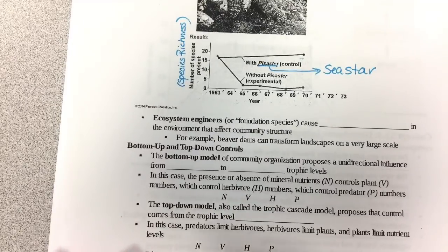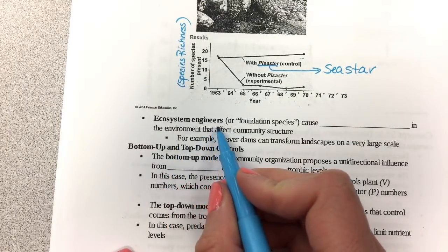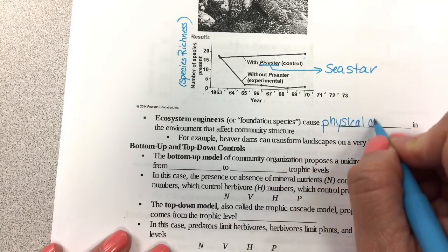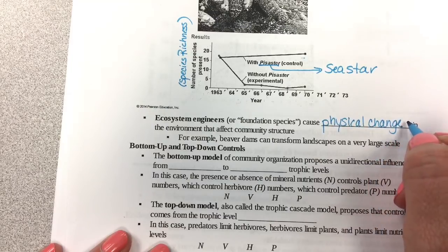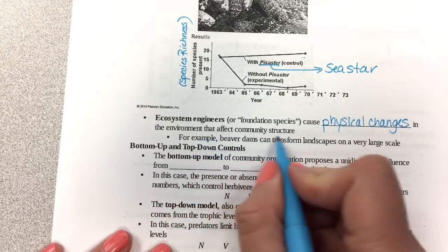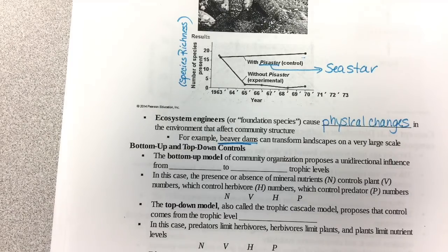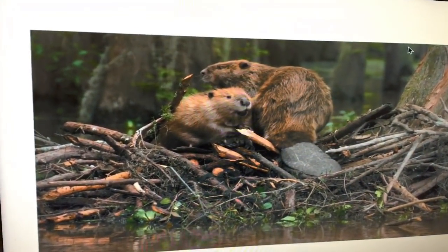Some species are called ecosystem engineers because they cause actual physical changes in the environment that affect community structure. Beavers are an example — they transform landscapes by building dams, pooling water, and so on, having a large effect on their community.